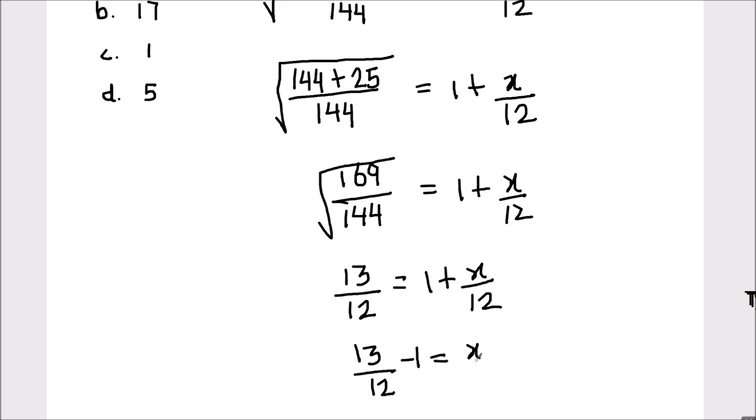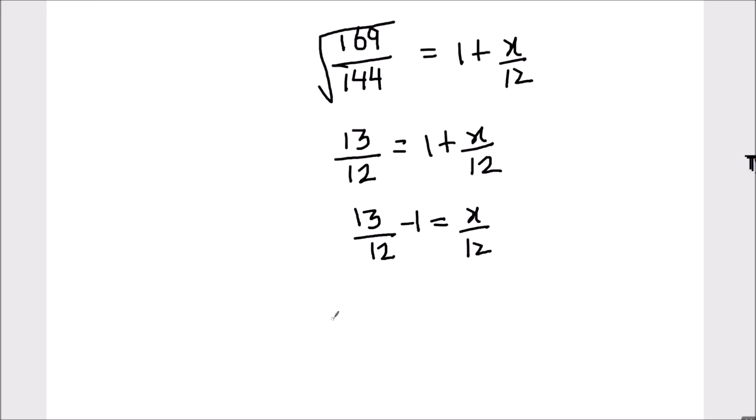LCM is 12. 13 minus 12 upon 12 equals x upon 12. Because we have taken the LCM, 12 is the LCM, so that's going to be 13 minus 12 upon 12 equals x upon 12.